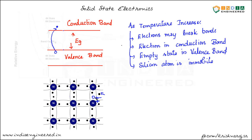Here we have a vacancy of electron. The energy difference between these electrons in the valence band is really small. So this electron here can move to occupy this vacant state. This electron may move to this vacant state, thereby creating an empty state here. Let's say this electron moved to this position.